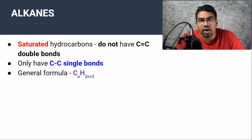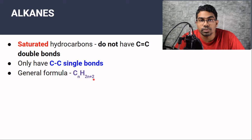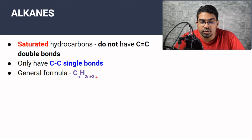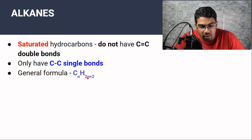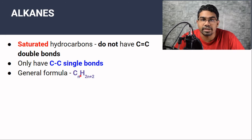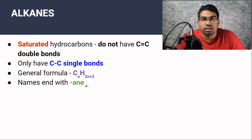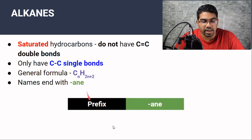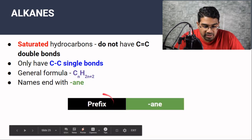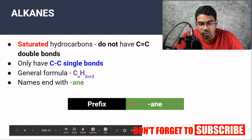The general formula for alkanes is CnH(2n+2), where n represents the number of carbon atoms in the molecule and 2n+2 represents the number of hydrogen atoms based on the number of carbons. All alkanes end with -ane, so their names consist of the relevant prefix followed by -ane.